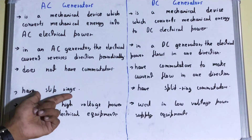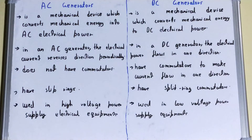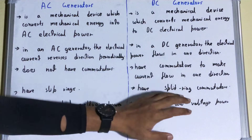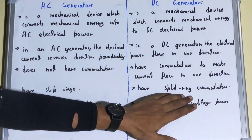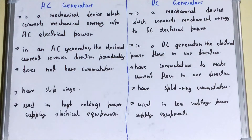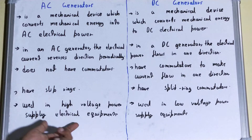AC generators have slip rings for the production of AC current, but in the case of DC generators, they have split ring commutators for the generation of DC current.